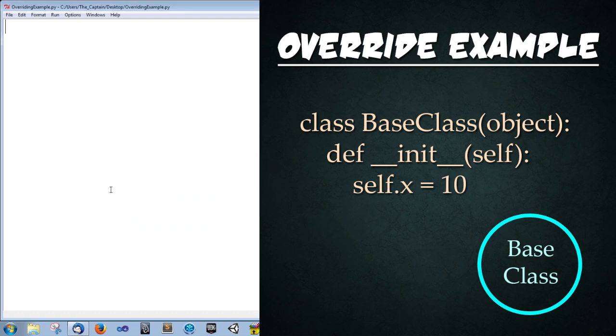So first we're going to create a base class. Type class BaseClass. It's going to inherit from Python's object, colon, enter. And then we're going to create the constructor. Type def underscore underscore init underscore underscore open parenthesis self close parenthesis, colon, enter. And then we're just going to create a simple variable called self.x is equal to 10. And we've got our simple base class created.